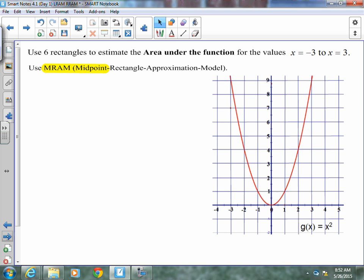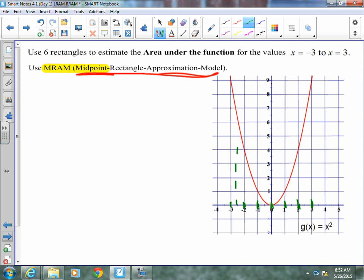Occasionally they have you do an MRAM, which is called a midpoint rectangle approximation model. This isn't too bad. We still need six rectangles. So our rectangles from negative three to three are still going to be one wide. They're going to be divided at the whole number, but we need to estimate their height at the middle. So if we look at the middle and go up to where it touches, our rectangle has to be about this tall. The middle here would be about this tall.